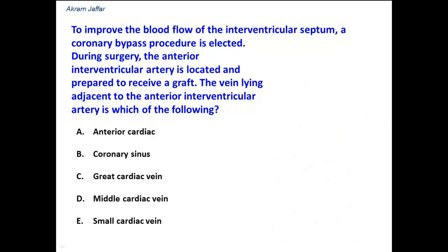To improve the blood flow of the interventricular septum, a coronary bypass procedure is selected. During surgery, the anterior interventricular artery is located and prepared to receive a graft. The vein lying adjacent to the anterior interventricular artery is which of the following?